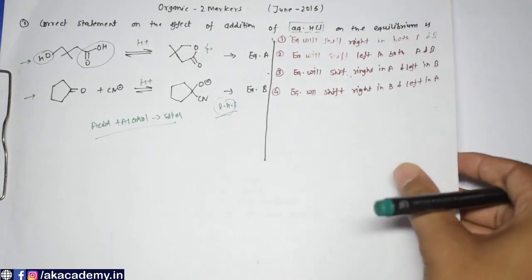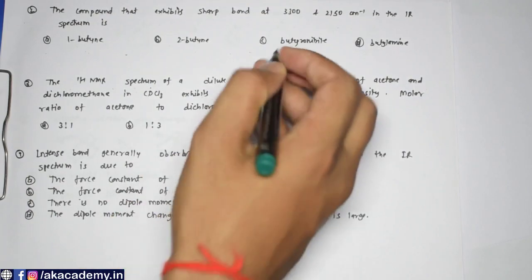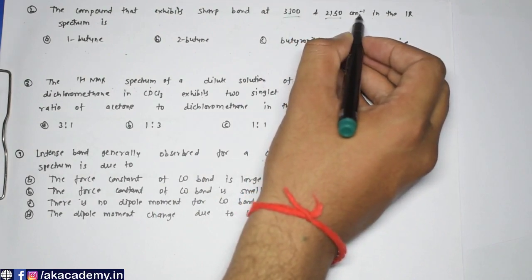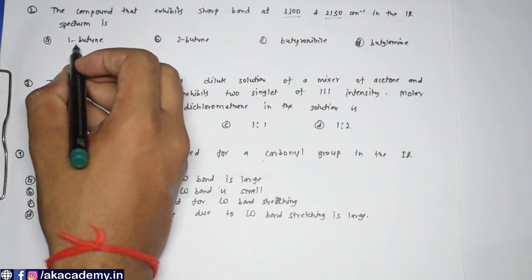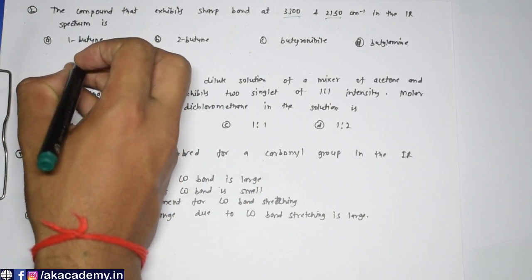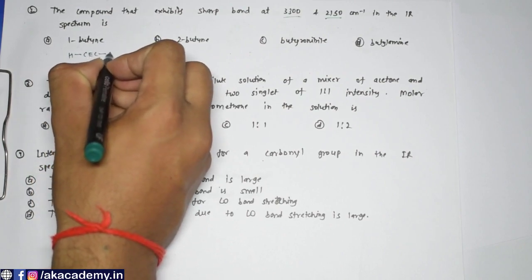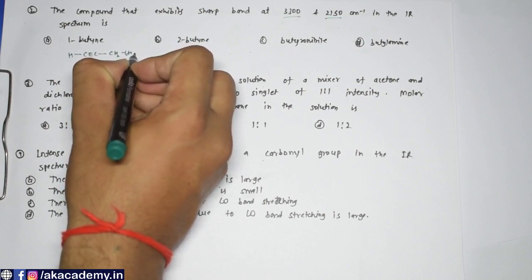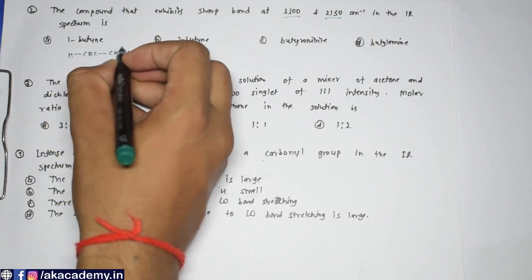The next question: which compound exhibits sharp bands at 3300 and 2150 cm⁻¹ in the IR spectrum? If I draw the structure, we have O–C≡C–CH₂–CH₃. From this structure it will be confirmed directly.